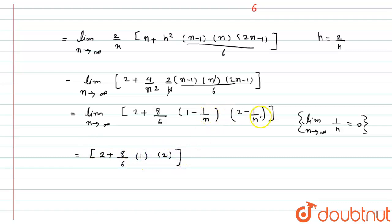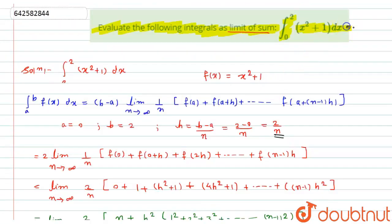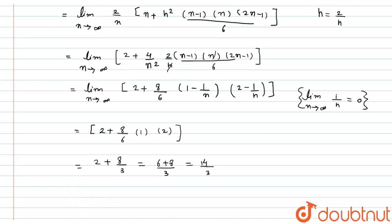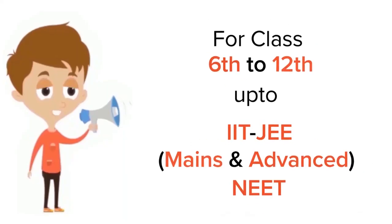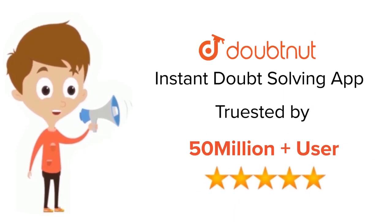So here finally I get 2 plus 8 by 3, which is 6 plus 8 by 3, which equals 14 by 3. So the value of the integral is 14 by 3. I hope you liked the solution, thank you. For class 6 to 12, IIT JEE and NEET level, trusted by more than 5 crore students, download Doubtnut app today.